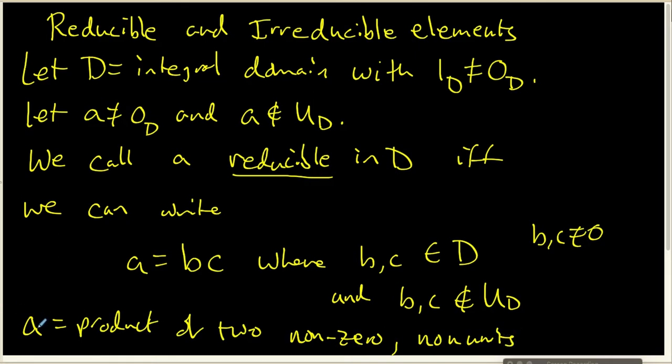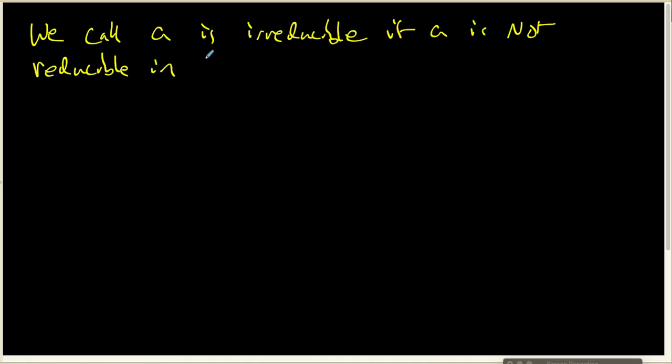Well, now that we have reducible defined, I want to define irreducible. And we're going to say a is irreducible if a is not reducible inside our domain D. And I want to think about what that means.